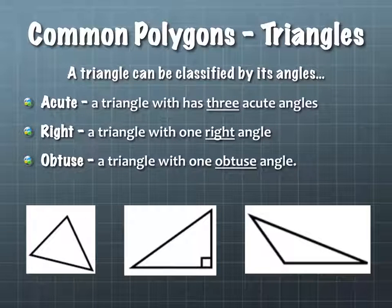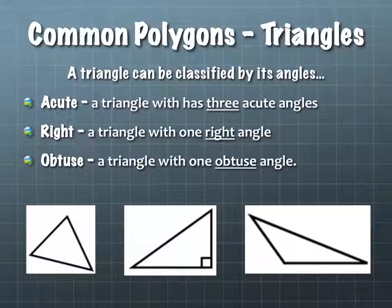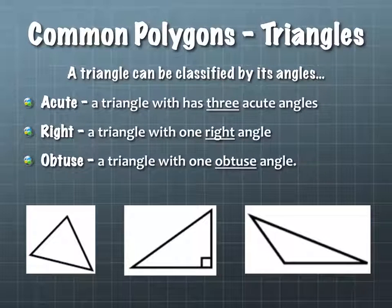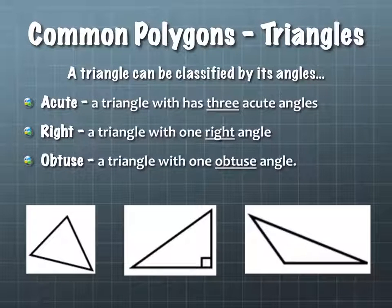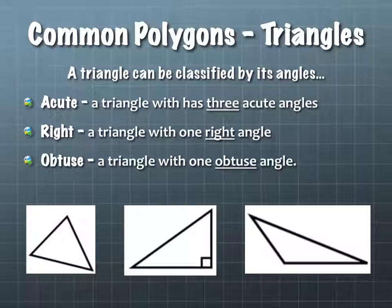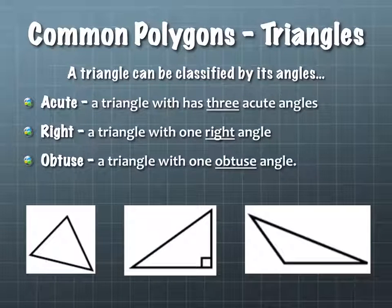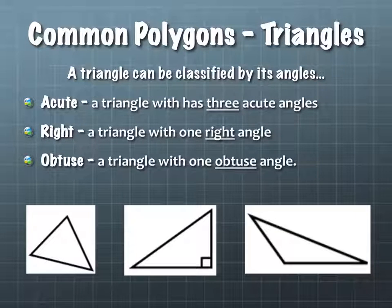An acute triangle is a triangle with three acute angles. A right triangle has one right angle, and an obtuse triangle has one obtuse angle. The right triangle and the obtuse triangle also have some angles that are acute — the other two of them are, but they have this one angle that's not.